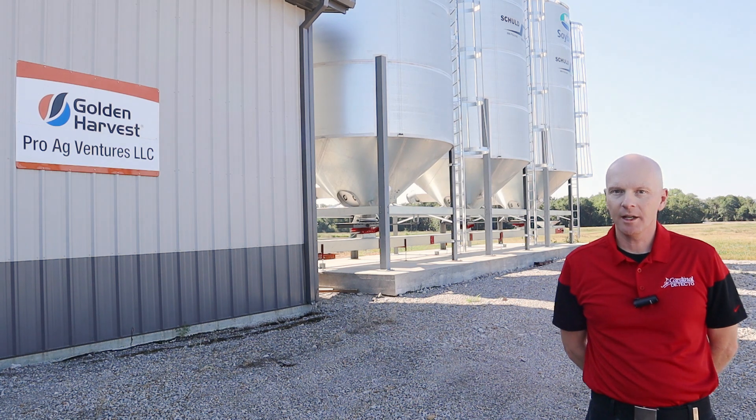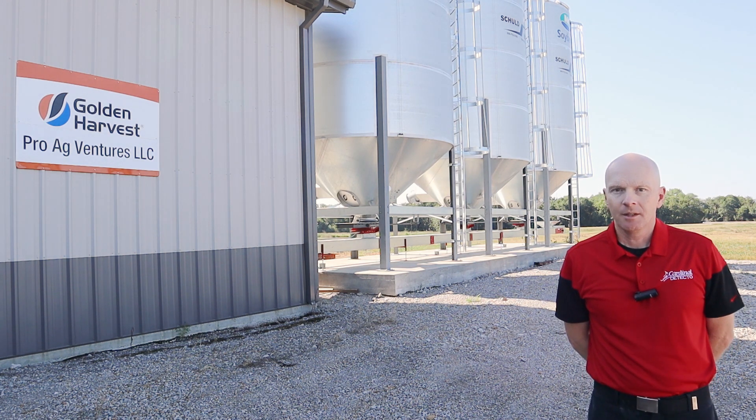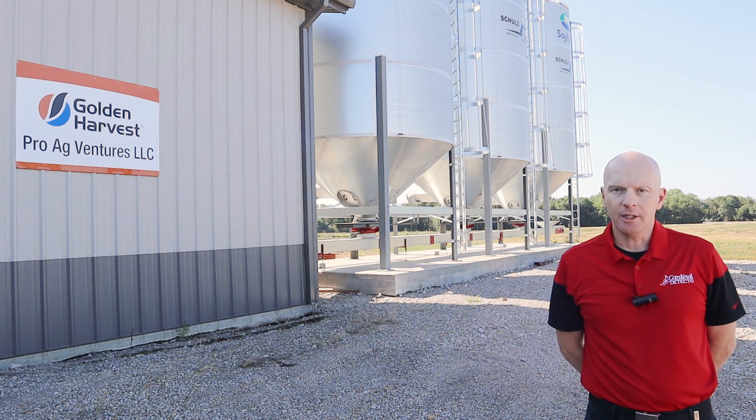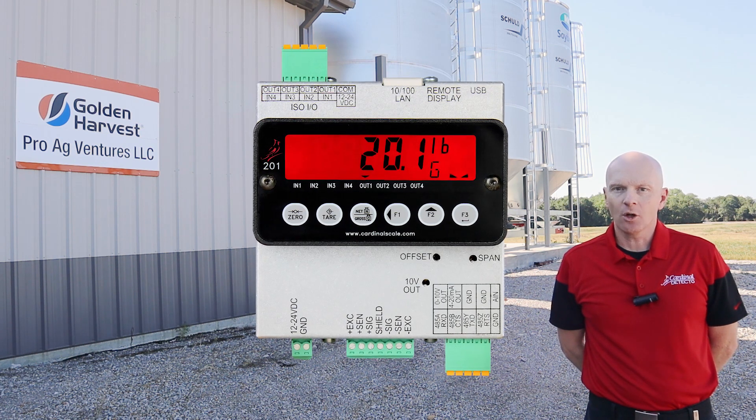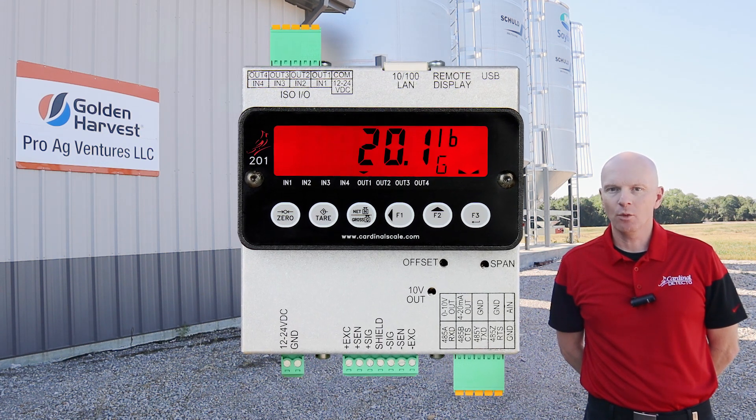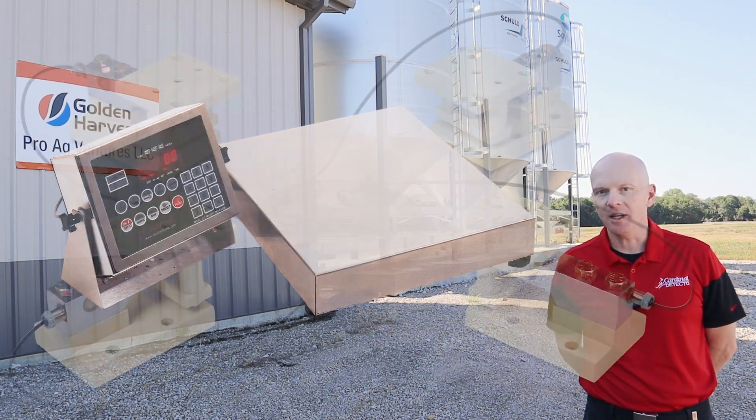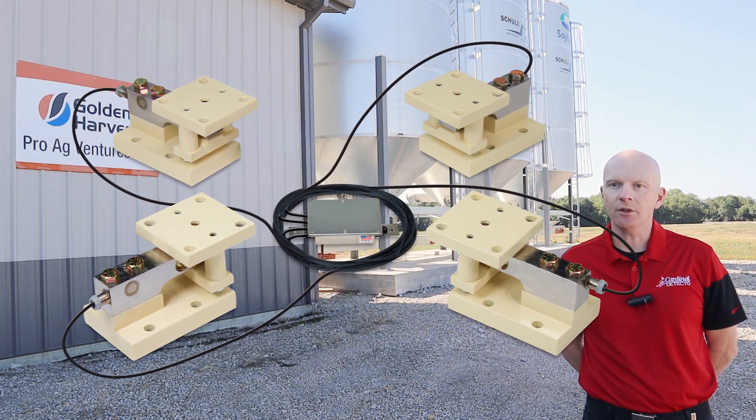ProAg Ventures is located in Liberal, Missouri and owned by Jess Daniels. They use a KSI seed treating system that utilizes the Cardinal Scale 201 Den Rail Mounted Indicator, the EB Series Bench Scales, and the THBC Load Cell Kits.